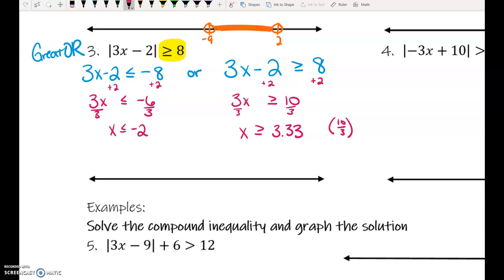If the directions don't specify how to leave your answer, then you get to pick. So, on this one, I've got negative 2, and then over here, I've got 3.3 repeated or 10 thirds, however you want to put that on there. Closed circles this time.